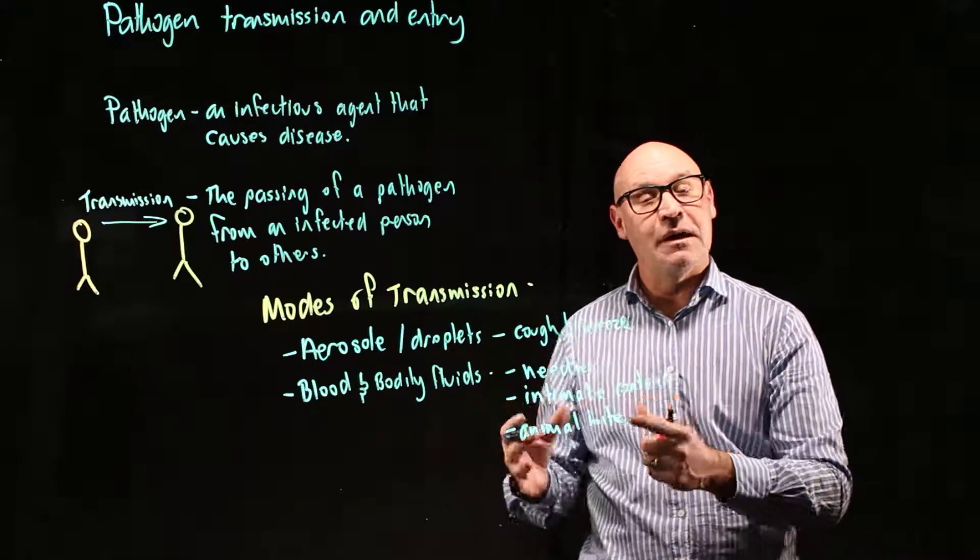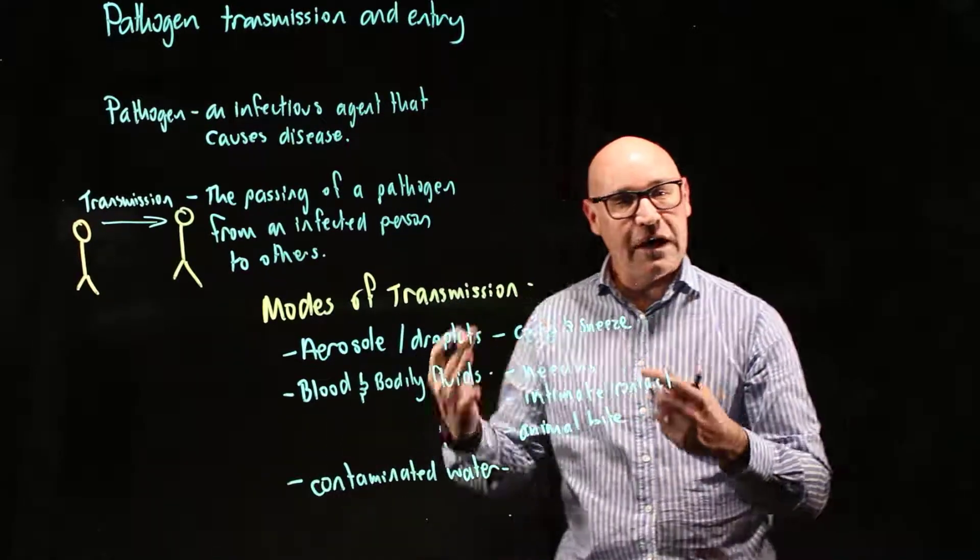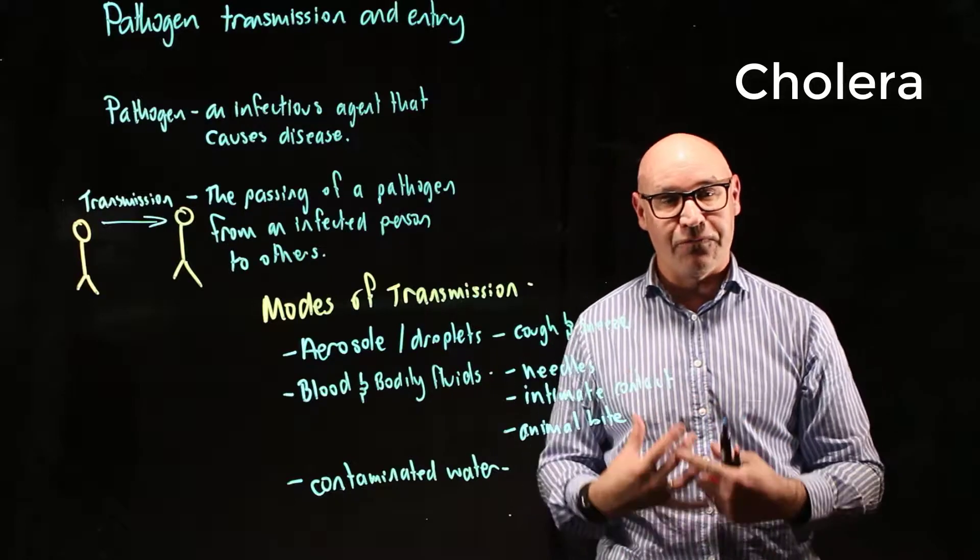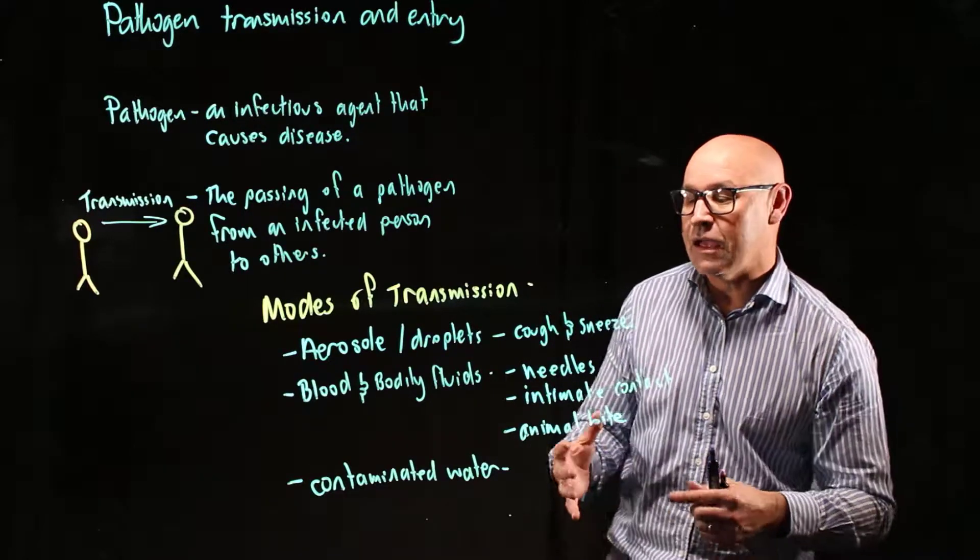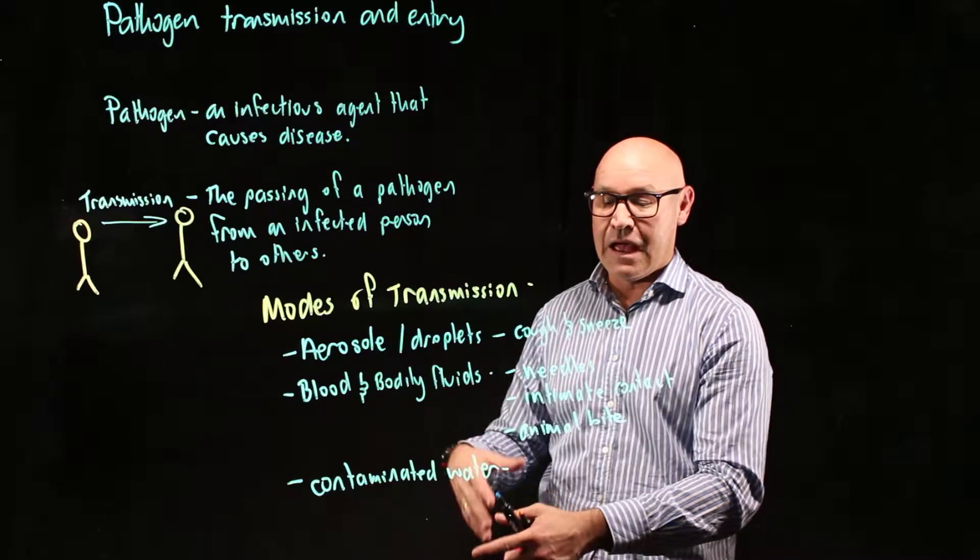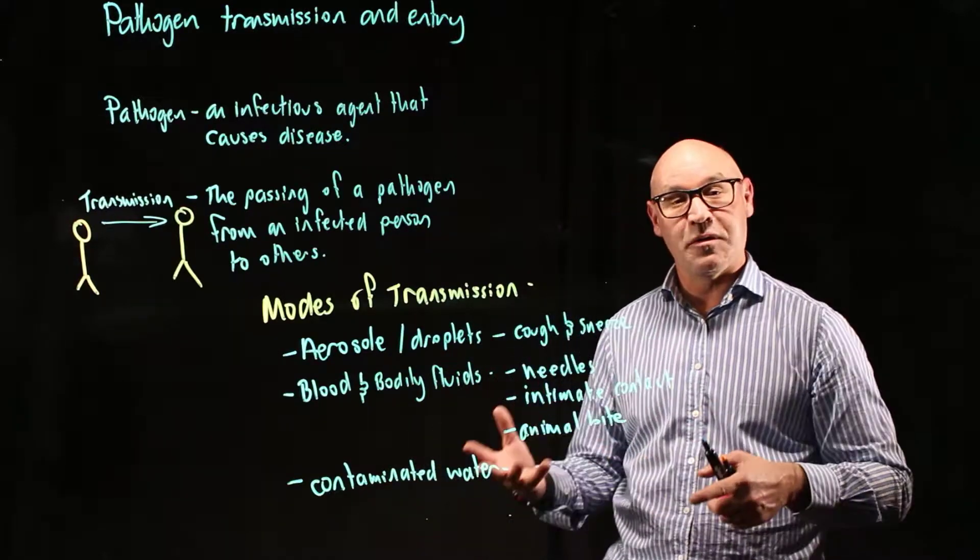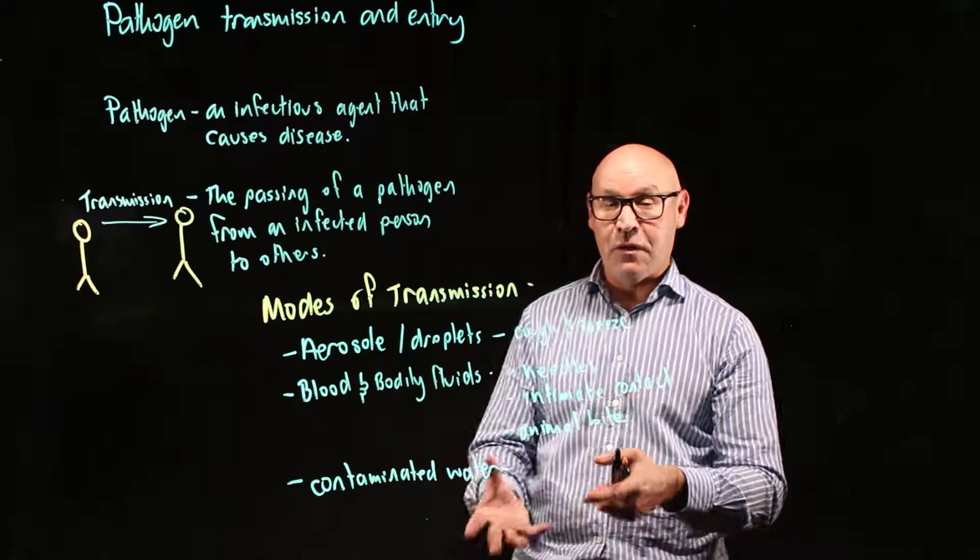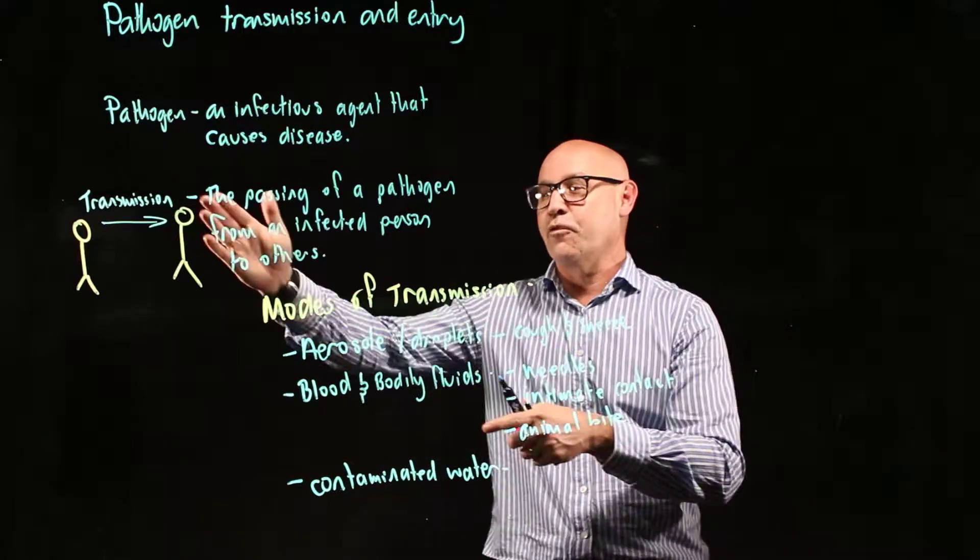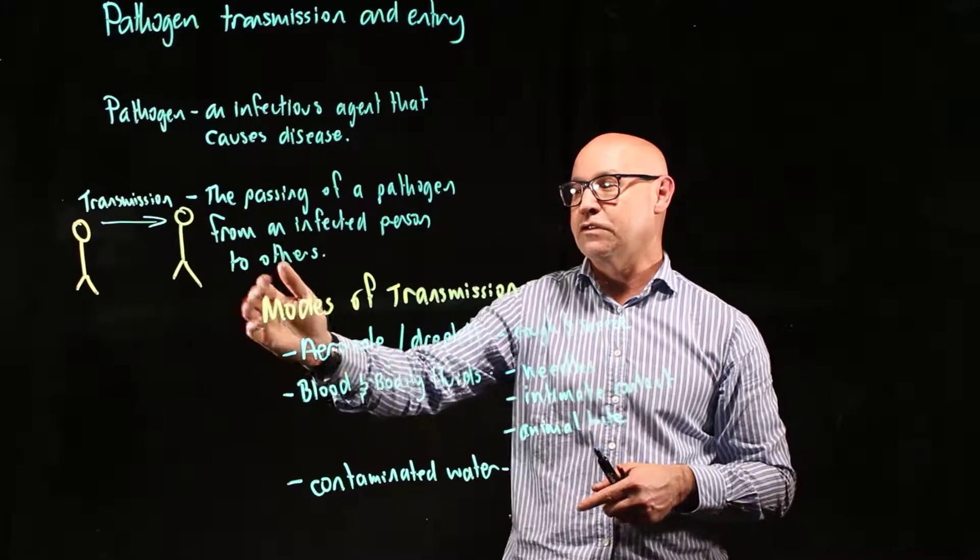The next one is from contaminated water. For example, cholera is a pathogen that causes severe diarrhea. Now if that diarrhea then finds its way into water and contaminates that water with the bacteria, such that if that water gets drunk by somebody else, the pathogen then moves from the first person via the water to the other person, and the other person gets infected.